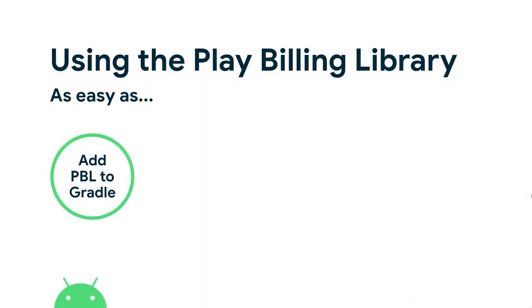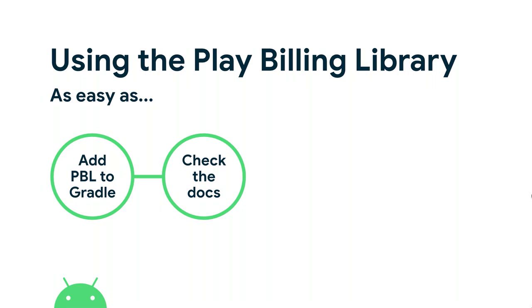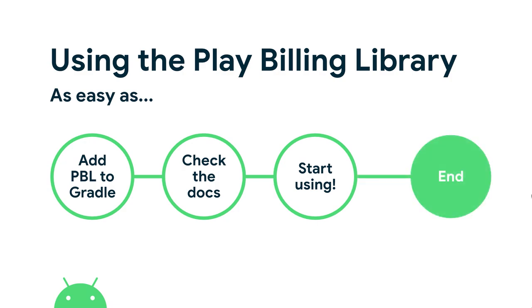Using the Play Billing library is easy. You add the Play Billing Library to Gradle, check the docs to see which methods to call for a few operations: connect, list the products, do the purchase, and list the products the user already purchased. You don't need to do a bunch of service connections. I'd say you could implement billing in a day, with testing and everything, using the Play Billing Library.